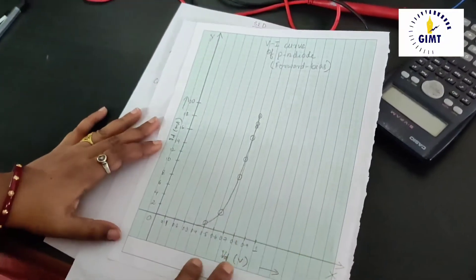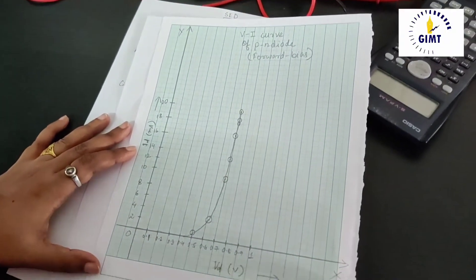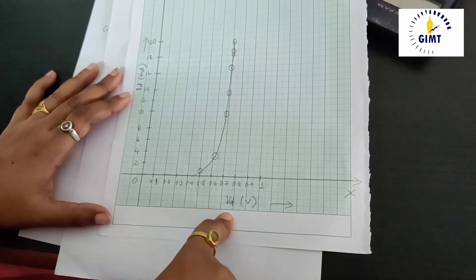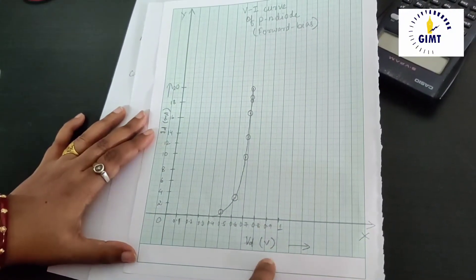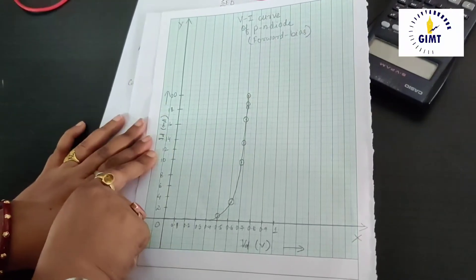Here is the forward characteristic graph. In x axis, I have plotted Vd, the diode voltage. And in the y axis, diode current Id.